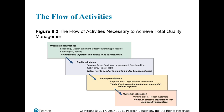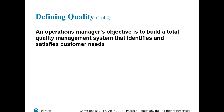Studies confirm that high quality products are positively correlated with profitability, and this flow will go nowhere without top management support and an organization that emphasizes a true culture of quality. Quality means different things for different people, products, and services under different circumstances. It all begins with a good understanding of what customers expect. The operations manager's objective is to build a total quality management system that identifies and satisfies customer needs.